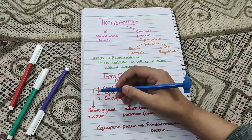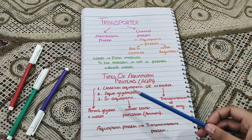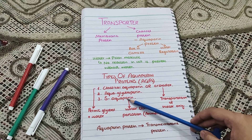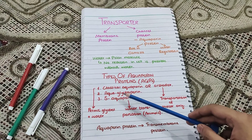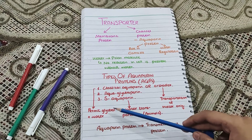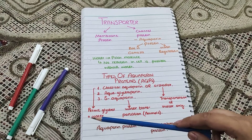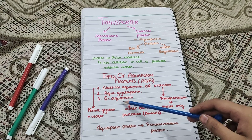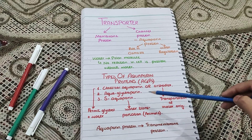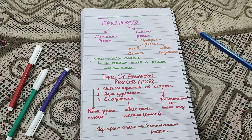The second type is aquaglyceroporin protein. The word 'glycero' represents glycerol, so it permits glycerol as well as water. The third type is aquaporin that is only present in animals and transports water — its specification is that it is found only in animals.